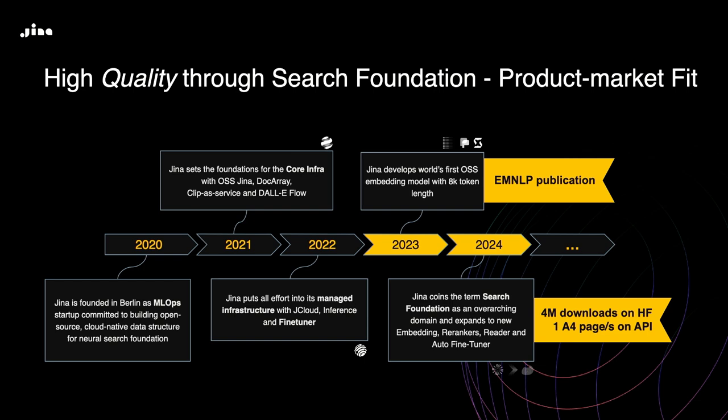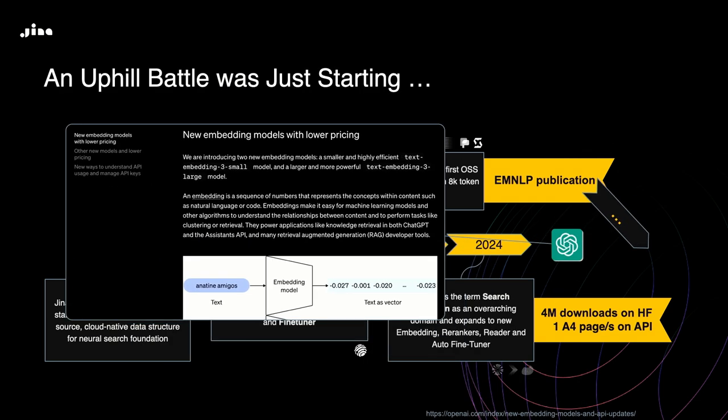We were processing almost one A4 page worth of information per second on our paid API — it seemed like we'd finally found product-market fit. But in January 2024, OpenAI reduced the price of their embedding models by five times. We had to fast-follow by reducing our API prices similarly, which convinced many people to switch from OpenAI embeddings to Jina embeddings.